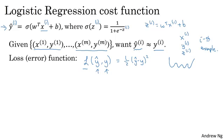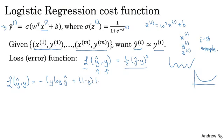So in logistic regression, we will actually define a different loss function that plays a similar role as squared error, that will give us an optimization problem that is convex. And so we'll see in a later video, it becomes much easier to optimize. So what we use in logistic regression is actually the following loss function, which I'm just going to write out here, is negative y log y hat plus 1 minus y log 1 minus y hat.